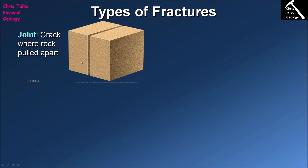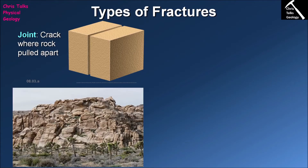Now if these two pieces of rock do not move relative to each other — so they don't go up or down relative to each other — then what we are looking at is a joint. Looking at this outcrop of granite, we can see lots and lots of vertical lines. These are joints formed in response to tectonic stresses, where the pieces of rock either side of the fracture are not moving relative to each other.